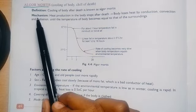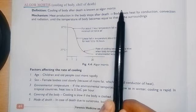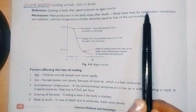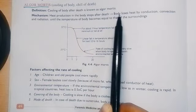The mechanism behind it: heat production in the body stops after death. Body loses heat by conduction, convection, and radiation until the temperature of the body becomes equal to that of the surroundings.